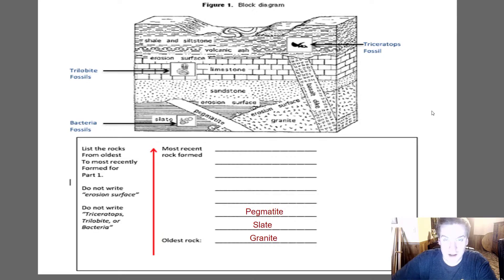Then we have the pegmatite. This will be when we use cross-cutting relationships. Pegmatite is just an igneous intrusion, and so we can see the pegmatite cut through the granite easily. It cuts through the slate easily, but it doesn't cut into the sandstone at all. It kind of follows this wavy erosion surface. Actually this erosion surface is called an unconformity. You have a gap in time when you have erosion. Don't write the erosion surfaces, so this is not a layer. This is just telling you what's going on geologically. It's another piece of evidence.